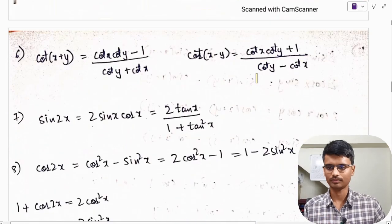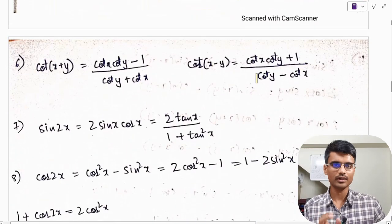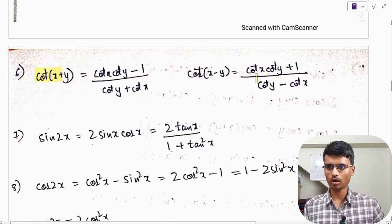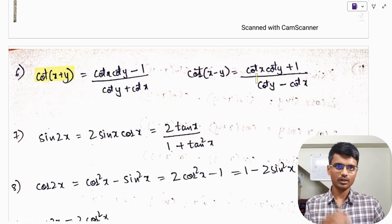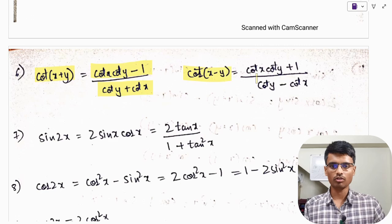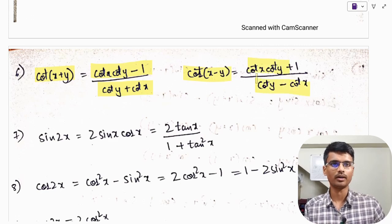For cot formulas, which are slightly tricky — listen carefully. Cot(x + y): the denominator is (cot y + cot x) and the numerator is (cot x · cot y − 1). Cot(x − y): the denominator is (cot y − cot x) and the numerator is (cot x · cot y + 1).